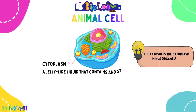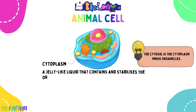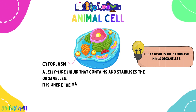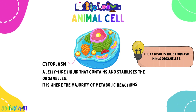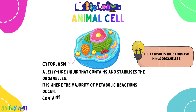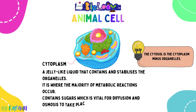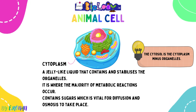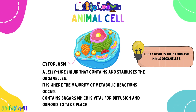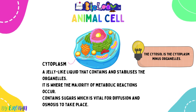Next we have the cytoplasm. Cytoplasm minus the organelles is known as the cytosol. It is the jelly-like liquid that contains and stabilizes the organelles. It is where the majority of metabolic reactions occur, and it contains sugars which are vital for diffusion and osmosis. You will return to the cytoplasm particularly in those chapters.